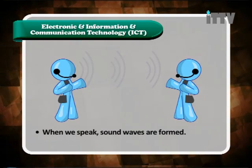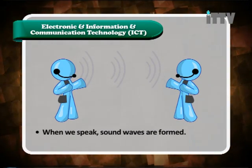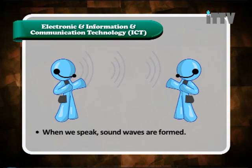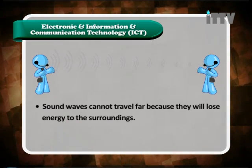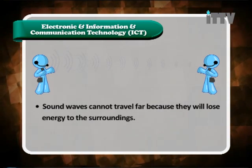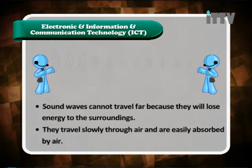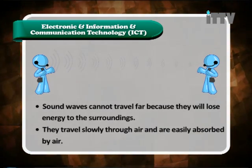When we speak, sound waves are formed and travel from one person to another through an air medium. Sound waves cannot travel far because they lose energy to the surroundings, they travel slowly through air, and are easily absorbed by air. Therefore it is not possible for the news reader to just read it aloud — they need a microphone and certain systems. We are now going to learn about those transmission and receiving systems.